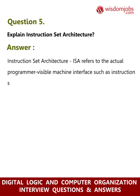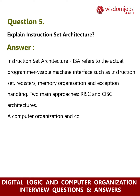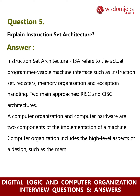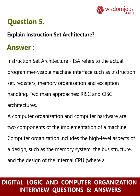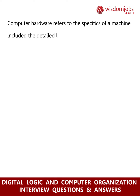Question 5: Explain instruction set architecture. Answer: Instruction set architecture (ISA) refers to the actual programmer-visible machine interface, such as instruction set, registers, memory organization, and exception handling. Two main approaches are RISC and CISC architectures. Computer organization includes the high-level aspects of a design such as the memory system, the bus structure, and the design of the internal CPU where arithmetic, logic, branching, and data transfers are implemented.